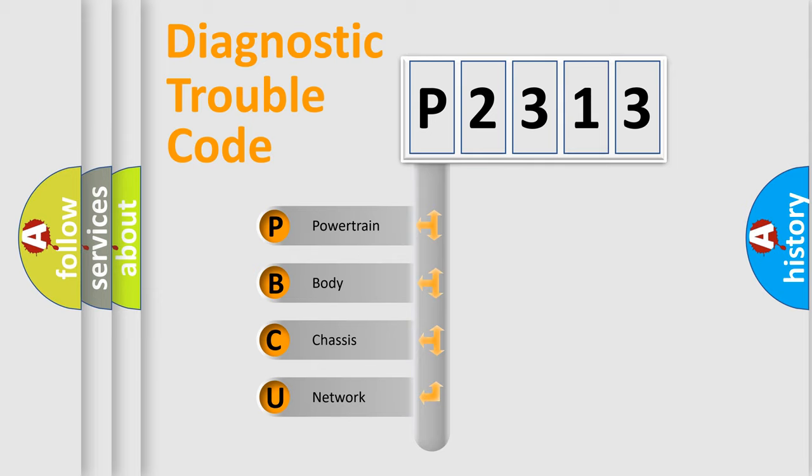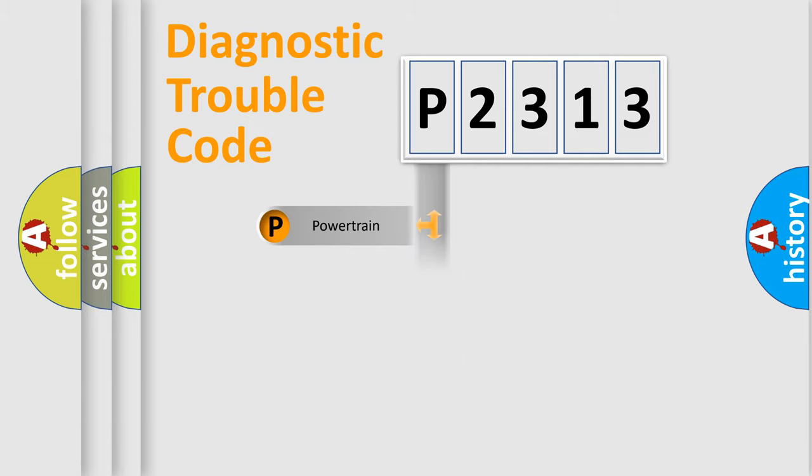We divide the electric system of automobile into four basic units: powertrain, body, chassis, and network. This distribution is defined in the first character code.